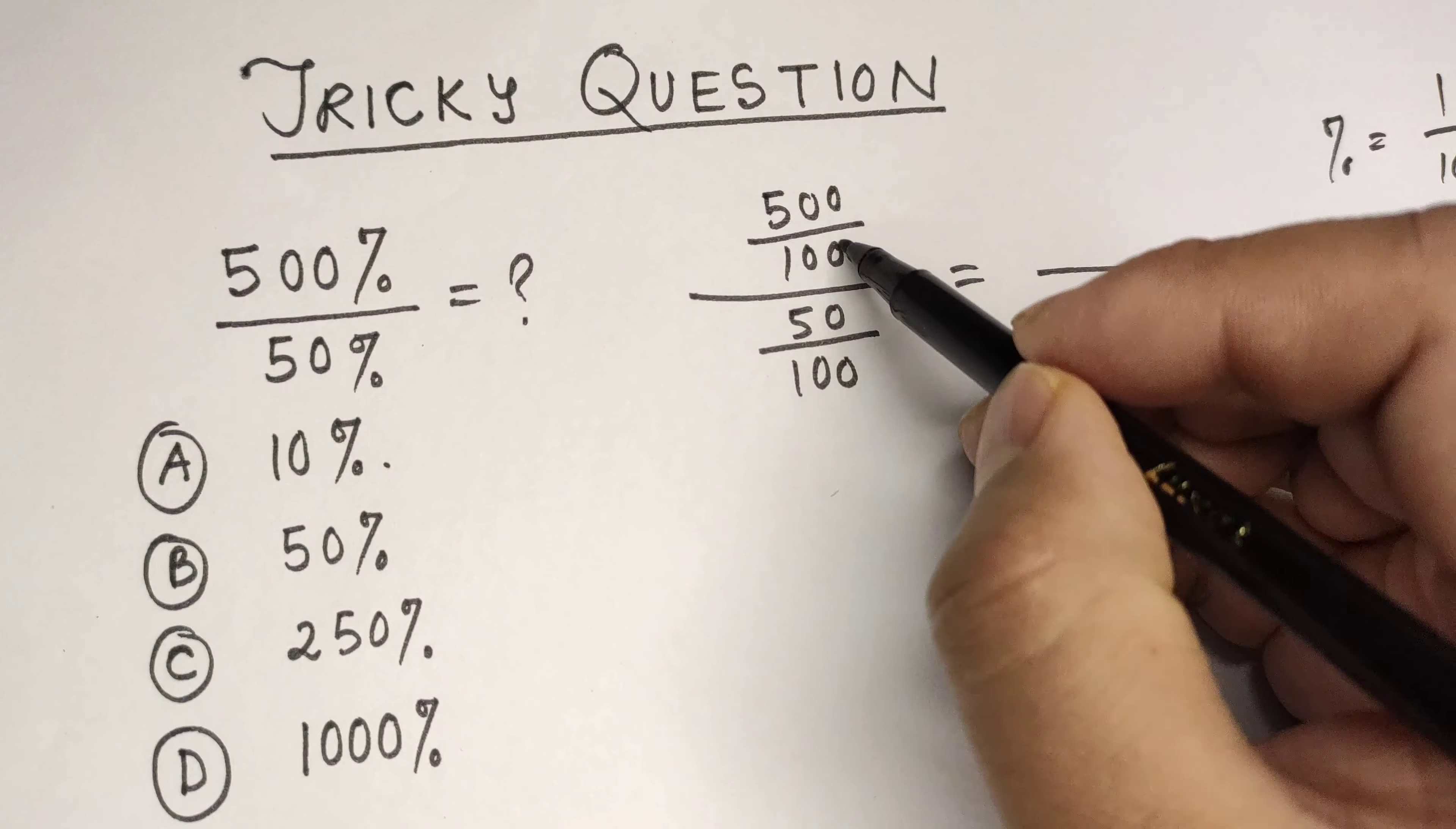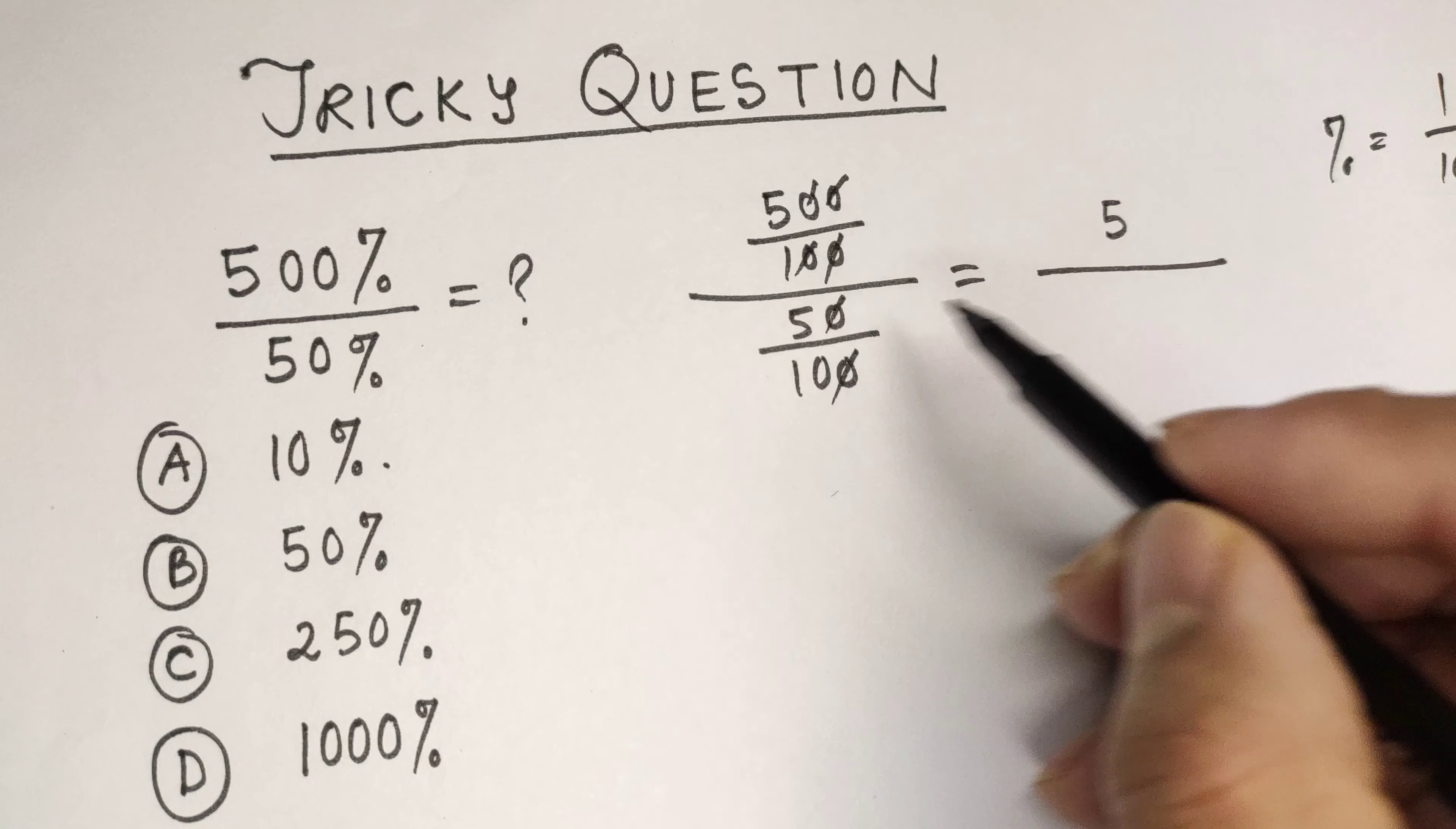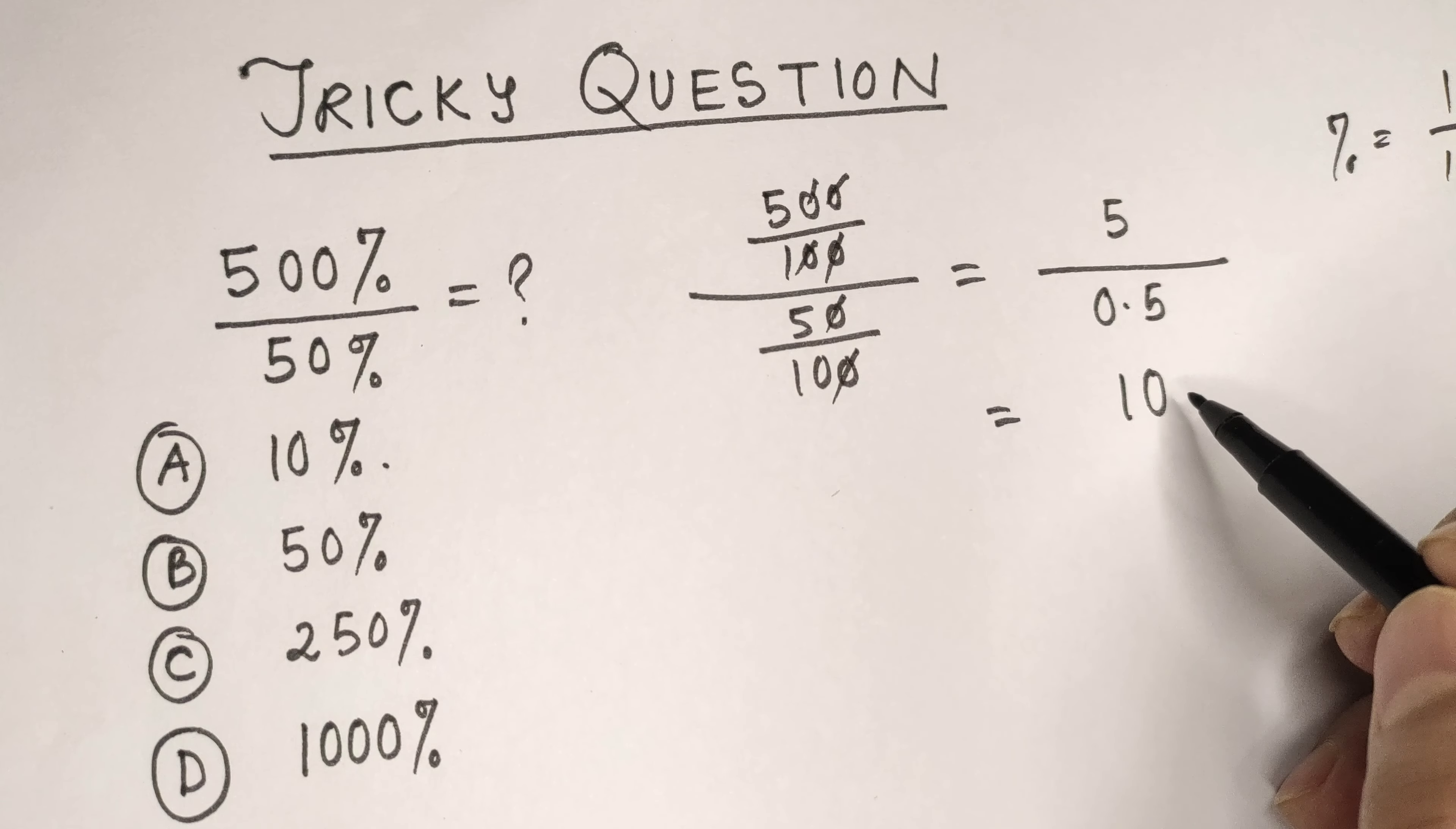The zeros cancel out, leaving only 5 divided by 0.5. After dividing these two, we get 10. Most people choose option A for this 10.